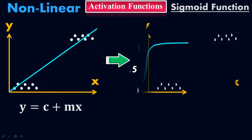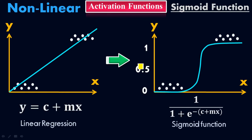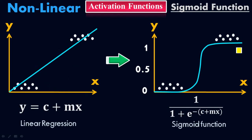By applying the sigmoid function to the linear regression, I draw a nonlinear decision boundary. All activation functions deal with nonlinearity. Here I shifted the model from linear into nonlinear, and now I can nicely divide class 1 and class 2 data sets separately with the help of the sigmoid function.